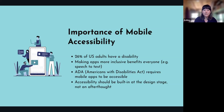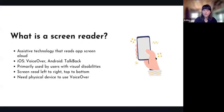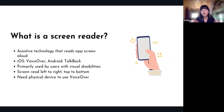So what is a screen reader? A screen reader is an assistive technology that reads the app screen aloud. It's slightly different on iOS and Android — on iOS it's called VoiceOver, and it's primarily used by users with visual disabilities, whether partially blind, fully blind, or anywhere in between. The screen is read out loud from left to right and top to bottom.